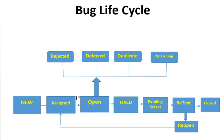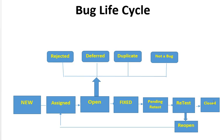This process of the bug's journey from its start till the end depends on the process. A defect traverses from one state to another in its lifetime as per its status. Here is the diagram — there are different stages of a typical bug lifecycle, such as: New, Assigned, Open, Fixed, Pending Retest, Retest, and Closed. The lifecycle starts from the birth of the bug and ends with its closure.